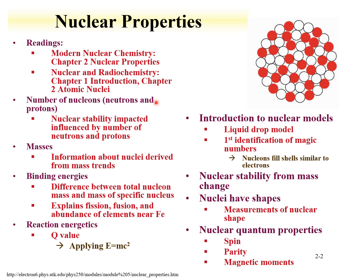These include that the number of nucleons—the neutrons and protons—have an influence on the nuclear properties. We're going to see that nuclei with odd numbers of protons and odd numbers of neutrons are inherently unstable. In fact, there are only four stable isotopes that have an odd number of neutrons and an odd number of protons. We're going to see that trends in masses of the nuclei are going to be used to determine information about their properties.